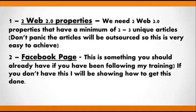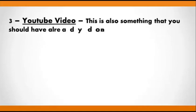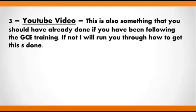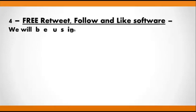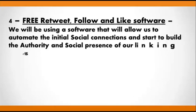Two is a Facebook page — something you should already have if you've been following the training in Google Cash Explosion. If you don't, I'll show you how to get it set up. Three is a YouTube video, also something you should have already done. It's extremely important that your YouTube video description has your site's URL in the first two lines. Four is a free retweet, follow, and like software that's going to allow us to automate the initial social connections and start to build the authority and social presence of our linking structure.